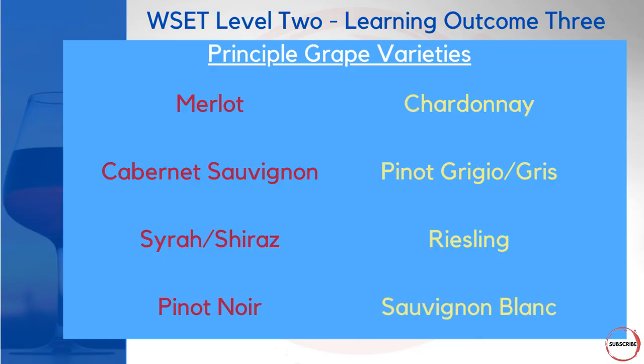So what are the principal grape varieties covered at level 2? For black grapes, it's Merlot, Cabernet Sauvignon, Syrah or Shiraz depending on where in the world you are, and Pinot Noir. For white grape varieties, we're looking at Chardonnay, Pinot Grigio or Pinot Gris, Riesling, and Sauvignon Blanc. For those eight principal grape varieties, there are a number of assessment criteria under learning outcome 3.